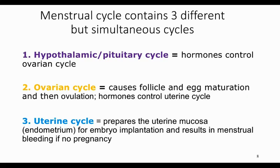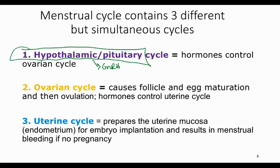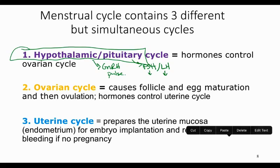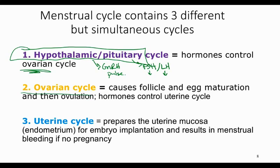The menstrual cycle should really be looked at as having three different cycles going on simultaneously. The first is up in the hypothalamus and pituitary, where we talked about the hypothalamus releasing GnRH and then the pituitary releasing either FSH or LH. That whole cycle is only there to control the ovarian cycle, which is the second cycle.